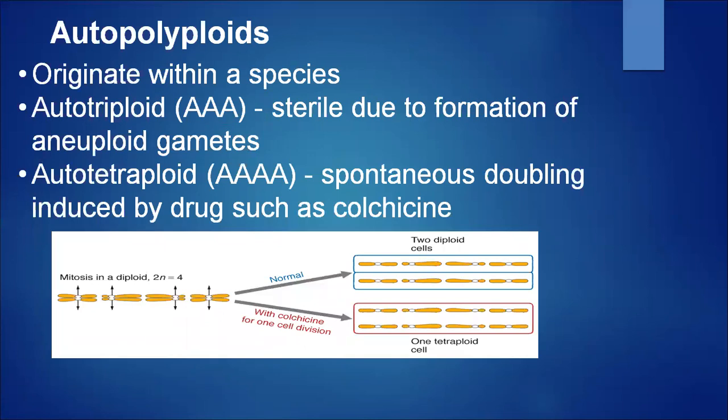The first type is autopolyploidy. Autopolyploids are formed due to duplication of the same genome set within a species. If a diploid species contains two genomes of the same type — AA — then autotriploidy contains AAA, and autotetraploidy contains AAAA. Autotriploidy (AAA) is sterile due to formation of aneuploid gametes, while autotetraploidy (AAAA) arises from spontaneous doubling induced by drugs such as colchicine.